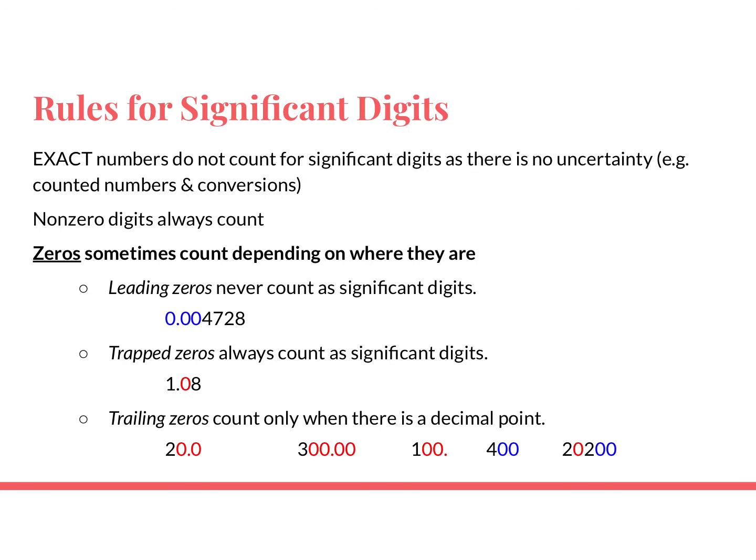And lastly, trailing zeros, or zeros at the end — it depends. They only count if there's a decimal place. For example, 20.0 has two significant figures because there's a decimal place. 300.00 has a total of five significant figures. 100.0 has a decimal point at the end, so that's three sig figs. But 400 has no decimal point, so there's only one sig fig. And 20,200 has only two sig figs. Zeros in blue do not count — decimal points are important, as is the location of the zero.